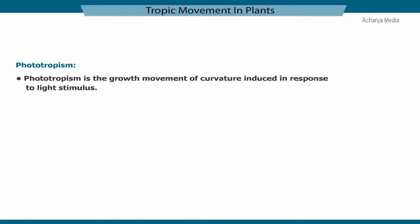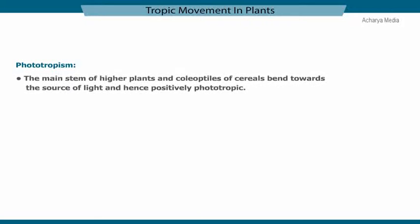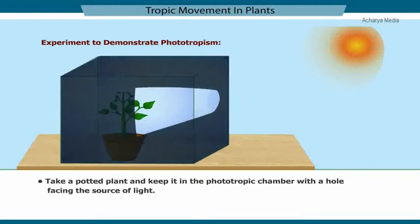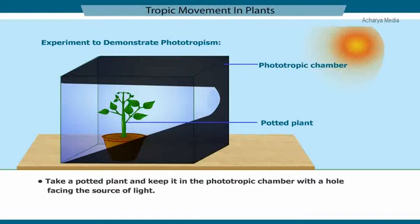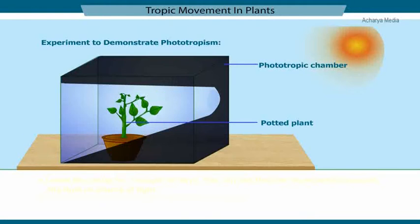Phototropism is the growth movement of curvature induced in response to a light stimulus. Different parts of a plant exhibit different phototropic movements. The main stem of higher plants and coleoptiles of cereals bend towards the source of light and are hence positively phototropic, while the roots of plants are negatively phototropic. In an experiment to demonstrate phototropism, a potted plant is kept in a phototropic chamber with a hole facing the light source. After a couple of days, the stem bends towards the hole, proving that the stem is positively phototropic.